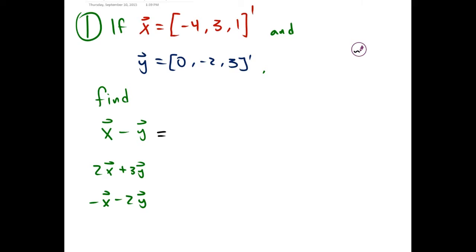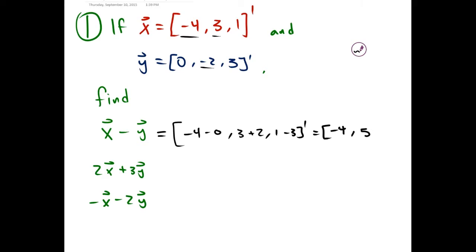We take each component of x and subtract the corresponding y component. So first we have negative 4 minus 0, then 3 minus negative 2, which is 3 plus 2, and then 1 minus 3. Don't forget the transpose symbol. This gives us (-4, 5, -2) transposed.